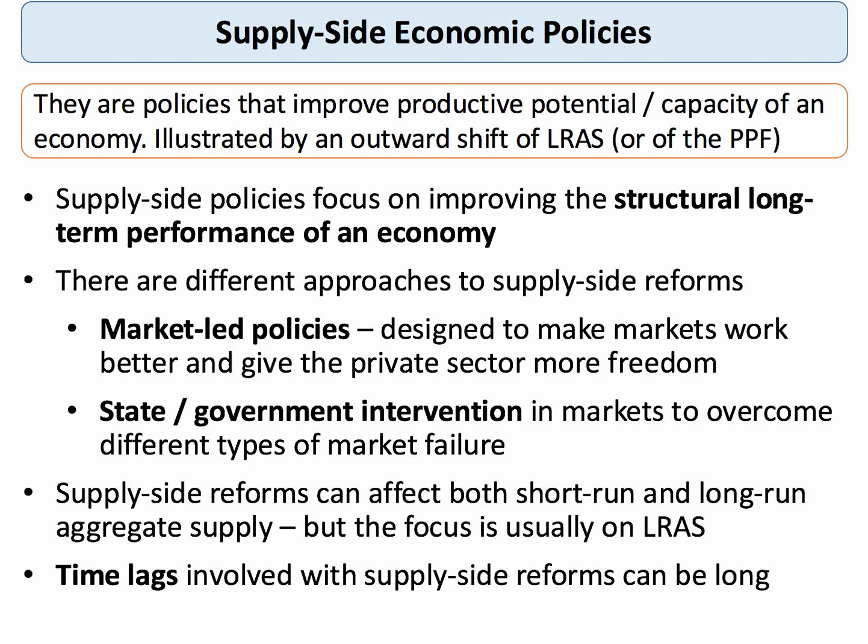Some economists favour market-led policies to give the private sector more freedom or autonomy in the allocation of resources. Other economists favour a more interventionist approach, in particular to overcome persistent and important market failures. Some economists favour a mix of free market and interventionist approaches. Our focus is normally on long-run aggregate supply, which tells us that the time lags involved in introducing supply side reforms can often be long and uncertain.